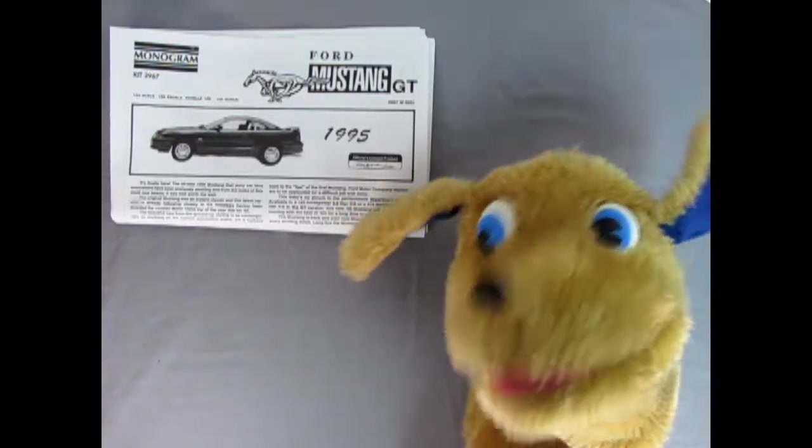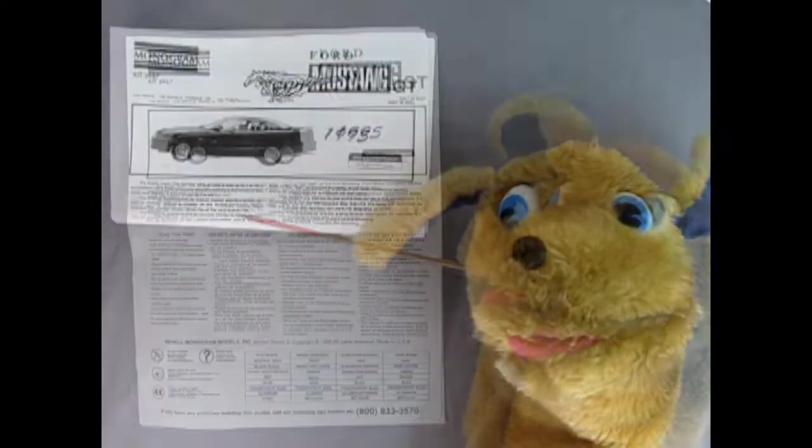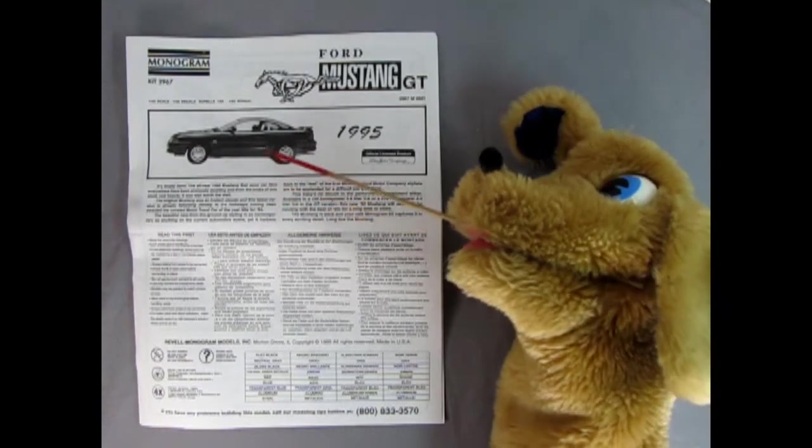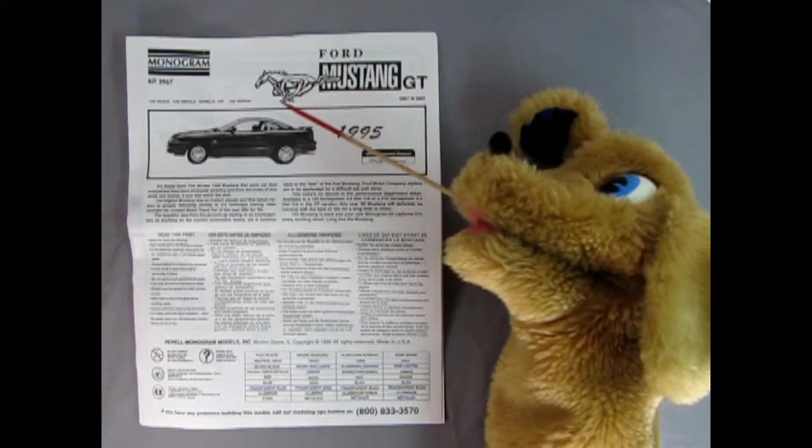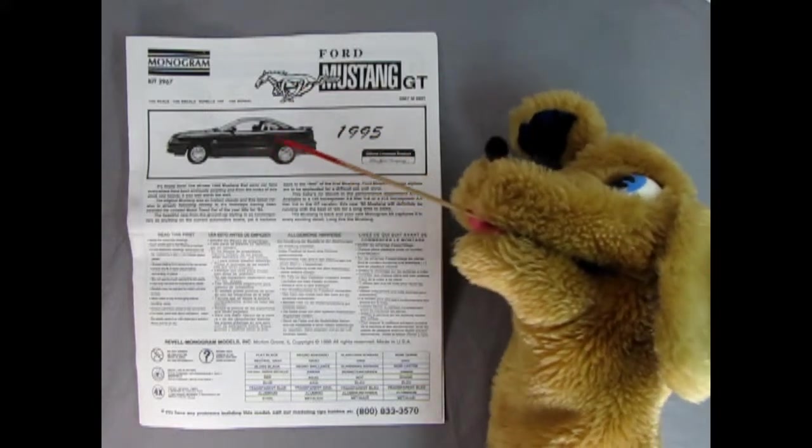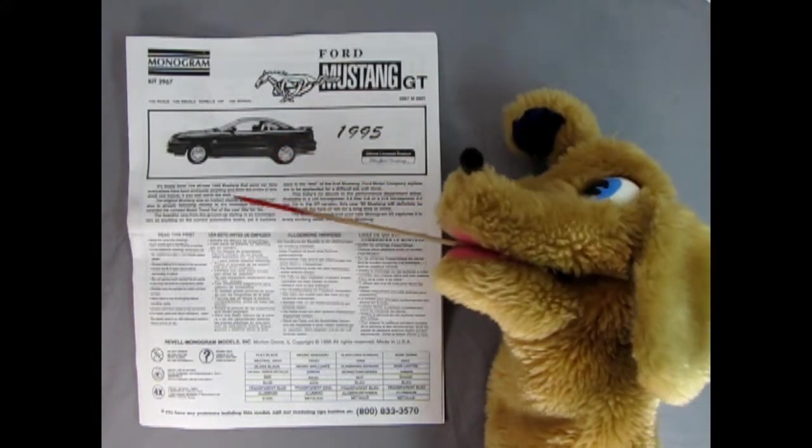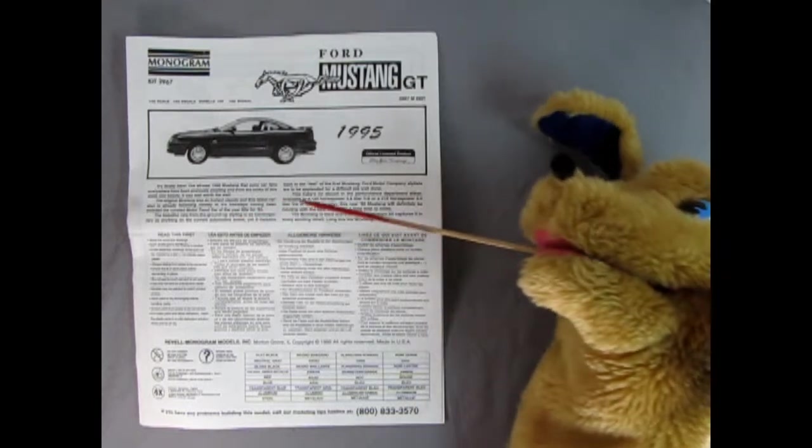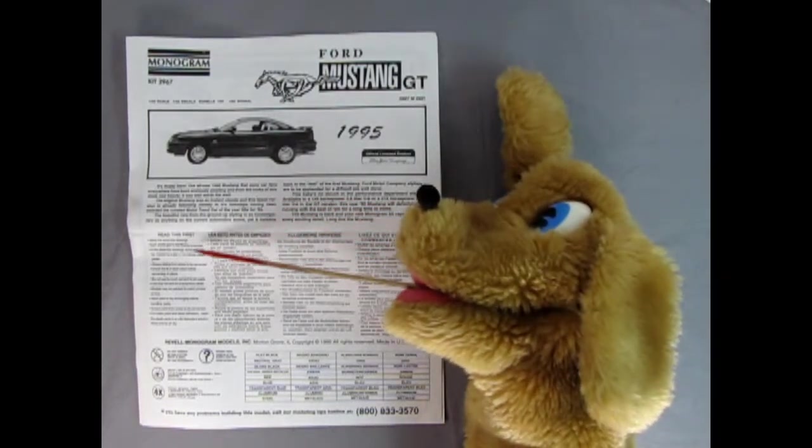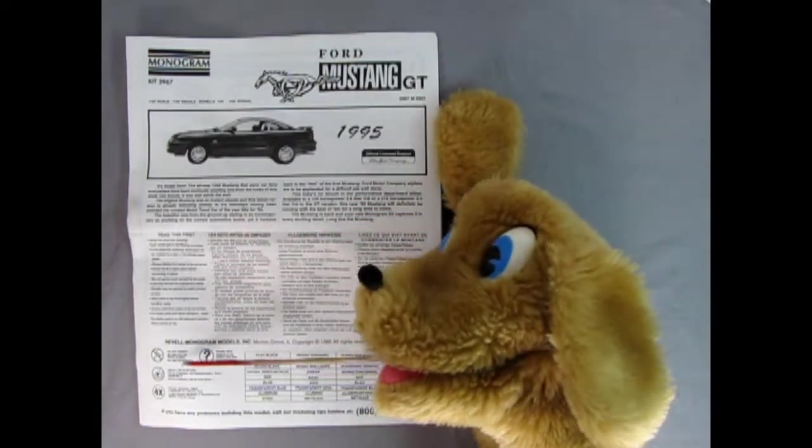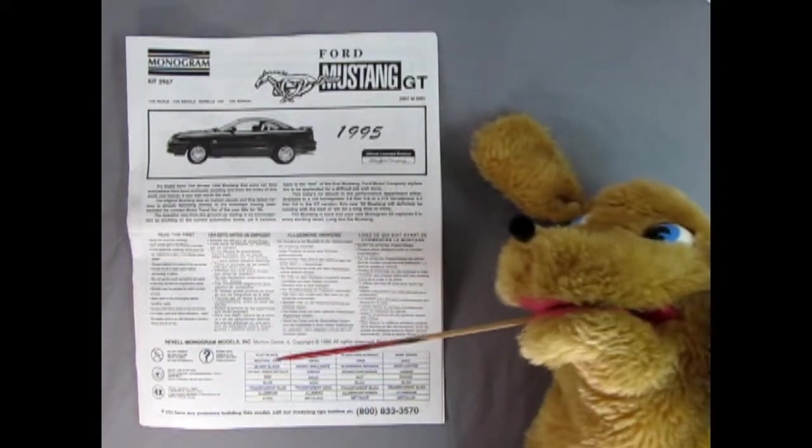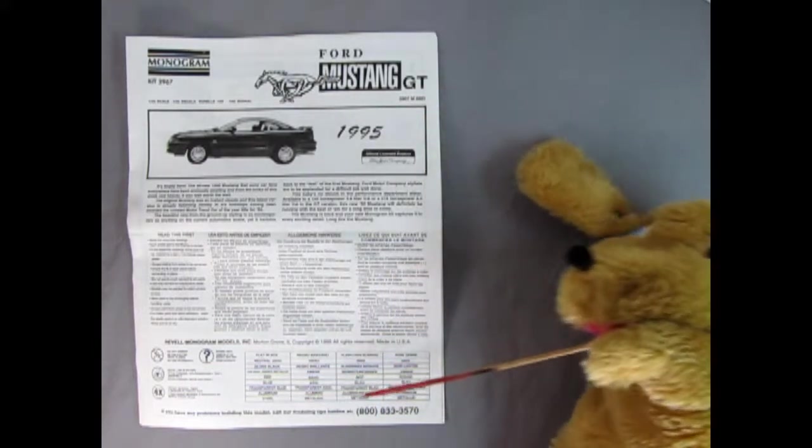I'm just going to grab my little pointer stick and then we'll get beginning. Now here we have our instruction sheet and you can see the nice pony running here as well as the side view of our Mustang. Then here we get a nice write-up on the Mustang and our read this first section, then some of the symbols you're going to see in the instructions as well as our nice paint chart down here.